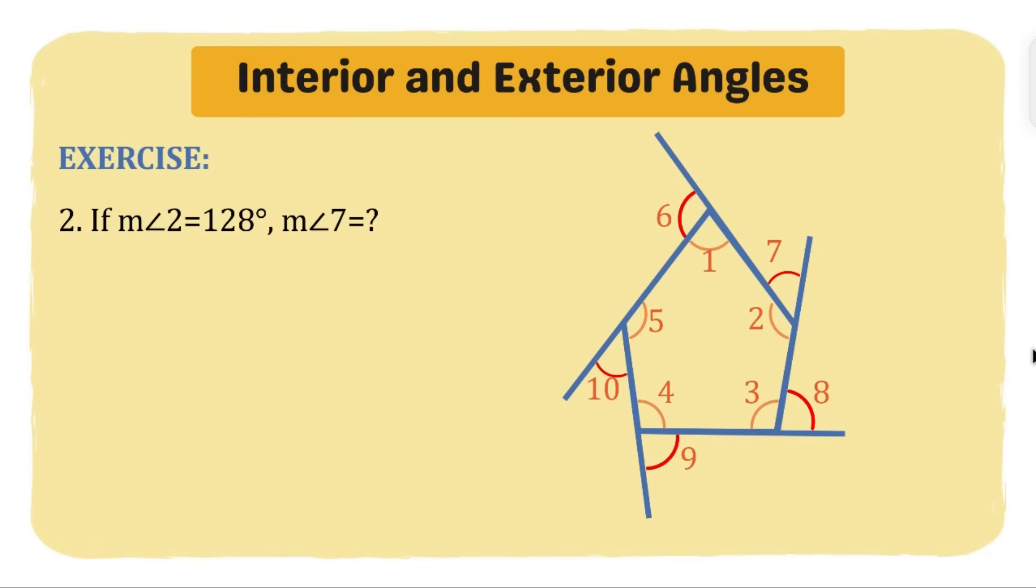Now let's have number two. If measurement of angle 2 is equal to 128 degrees, what will be the measurement of angle 7? Here we have the exterior angle 7 and the adjacent interior angle which is angle 2. Again, same process. We know that if you add them together it will be 180 degrees, so all you have to do is subtract the given angle. 128 is the given which is angle 2. Let's find angle 7: 180 degrees minus 128. Therefore the measurement of angle 7 is 152 degrees.